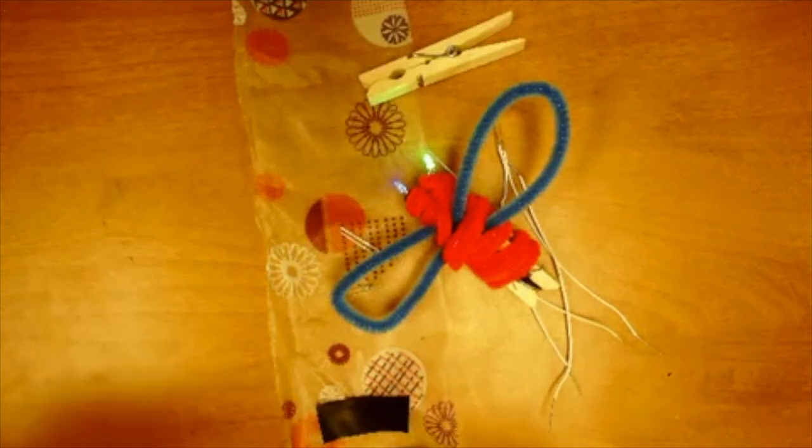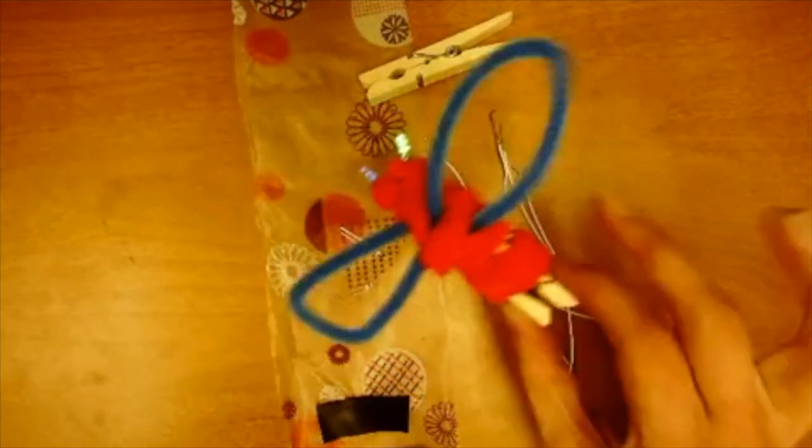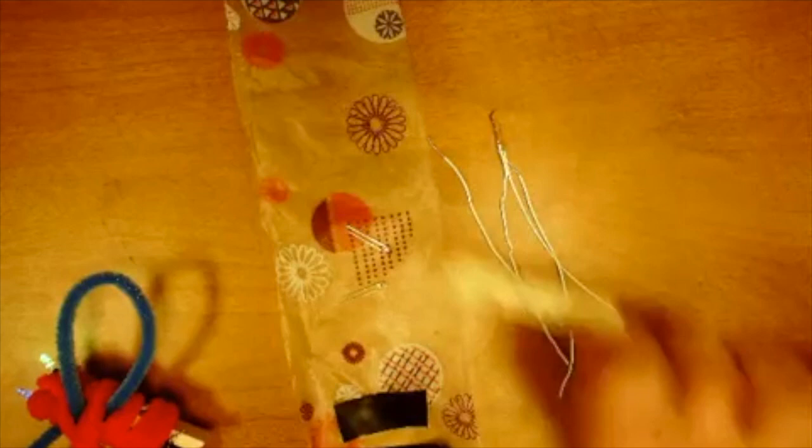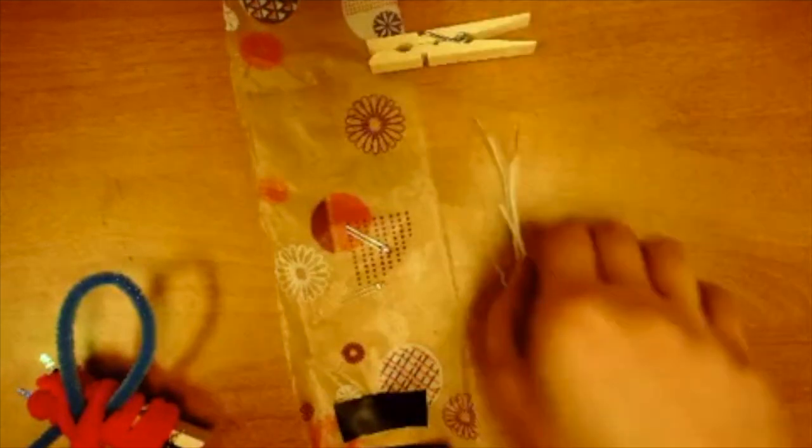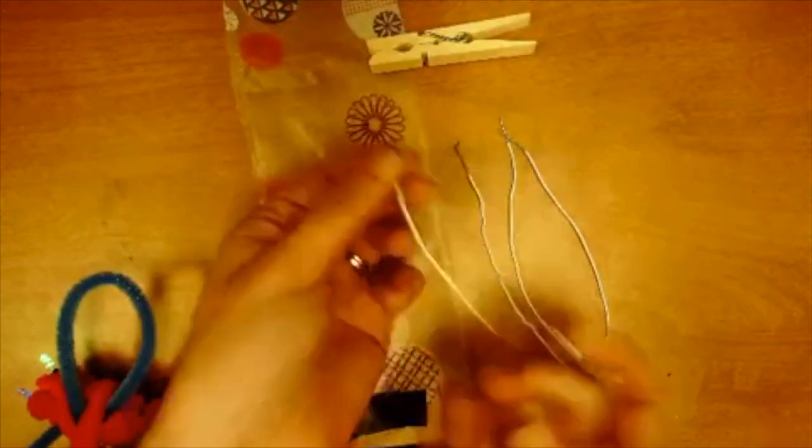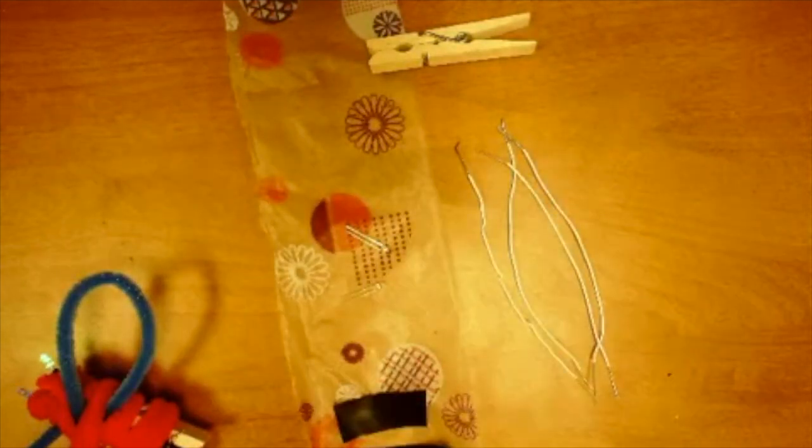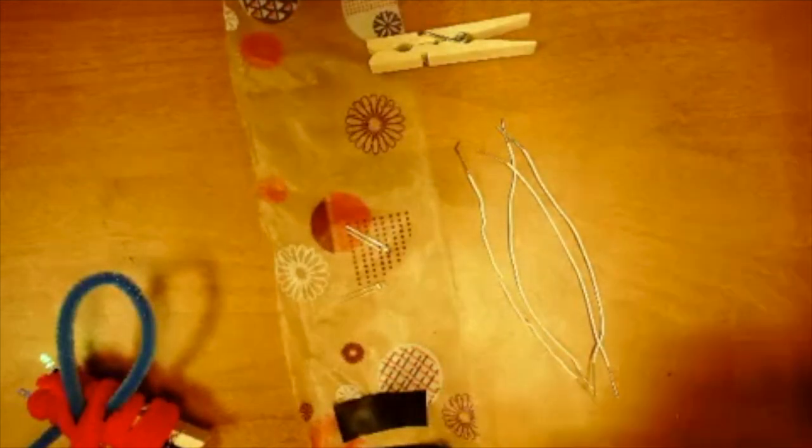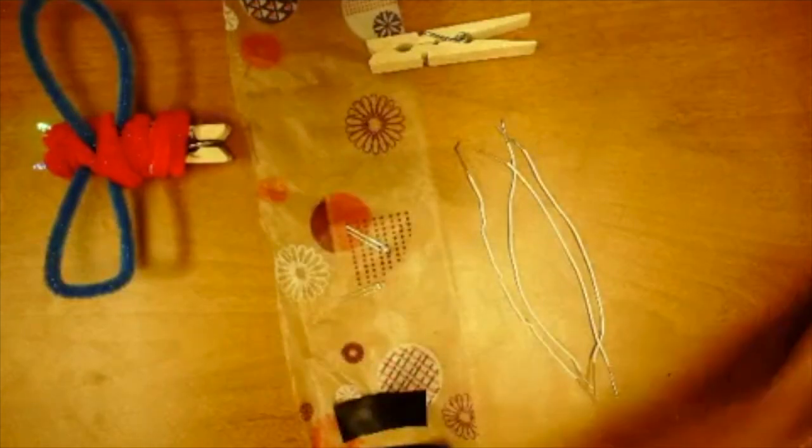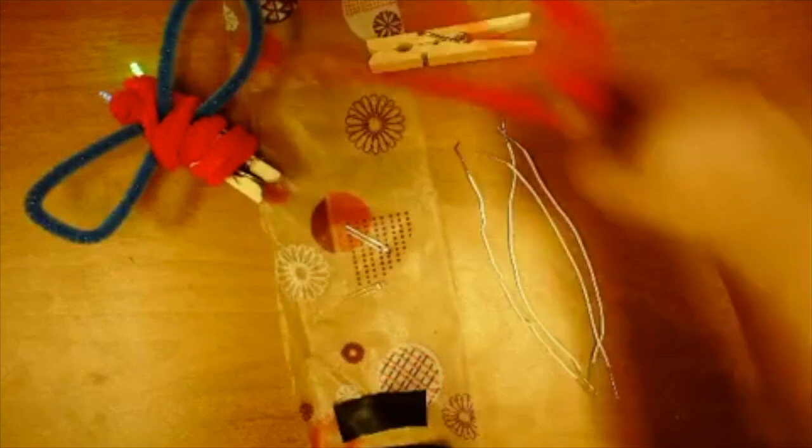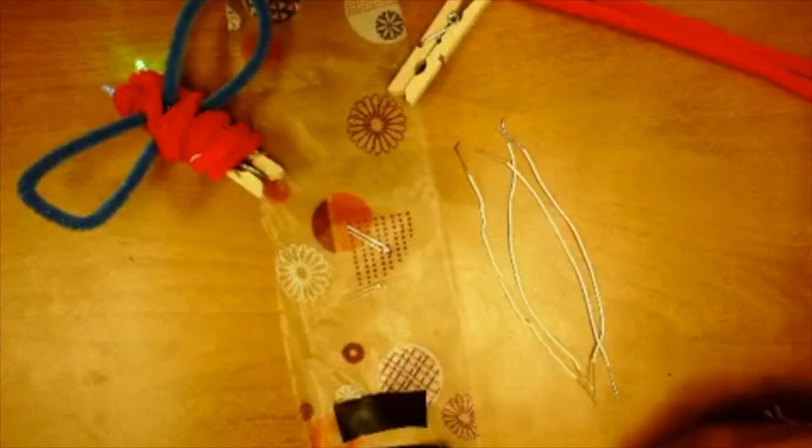Alright friends, today I'm going to show you how to make this really cool circuit bug with just these materials here. You will have a clothespin, four wires with some of the insulation stripped at the end, two LEDs, some electrical tape, and then your choice of pipe cleaners for decoration. This particular guy used two orange pipe cleaners and one blue pipe cleaner.